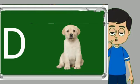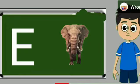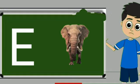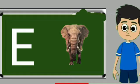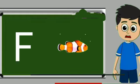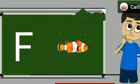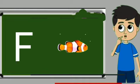Dog means kutta. E for elephant. Elephant means hathi. F for fish. Fish means machli.